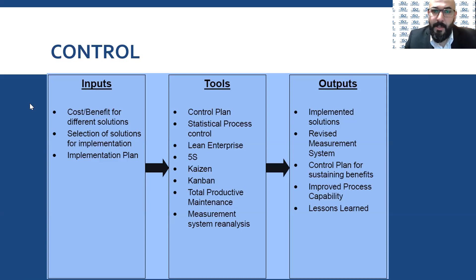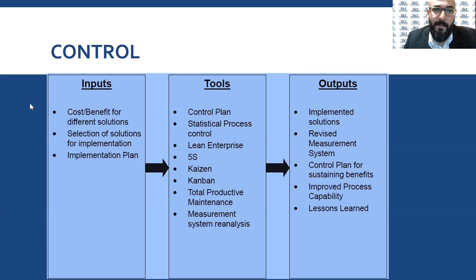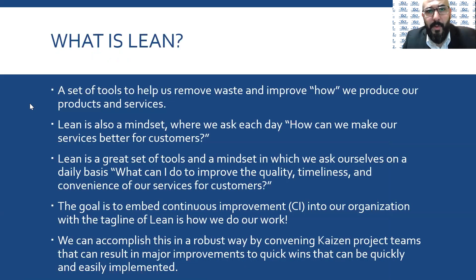For the Control phase, you need tools to sustain, such as control plans, statistical process control, 5S, kaizen, kanban, total productive maintenance, and measurement system re-analysis. Outputs include implemented solutions, a revised measurement system, a control plan for sustaining benefits, improved process capability, and lessons learned. After completing Six Sigma, send the documentation to the process owner. With that, I'm ending this video. In the next video, we'll talk about more details on Lean — what it is and why we should use it. See you then, thank you.